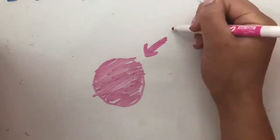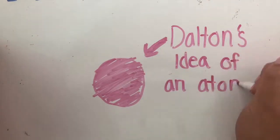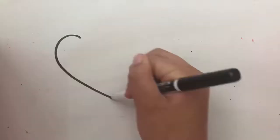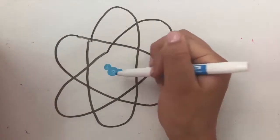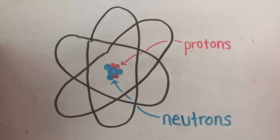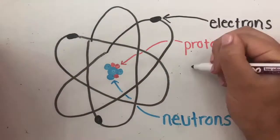All matter is composed of atoms, and this is what Dalton thought an atom looked like. But when he said atoms are indivisible, he was wrong because now we know that atoms are made up of protons, neutrons, and electrons.